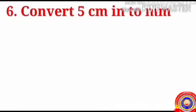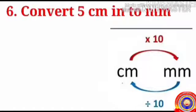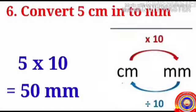Another example: convert five centimeters to millimeters. To convert centimeter to millimeter, multiply by ten — five into ten equals fifty millimeters.